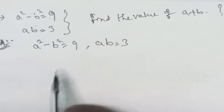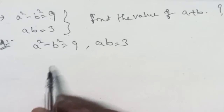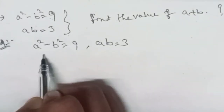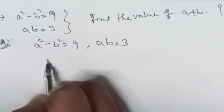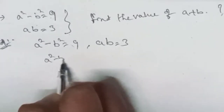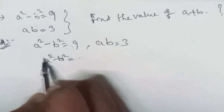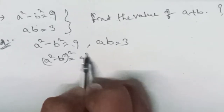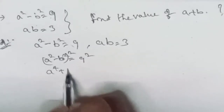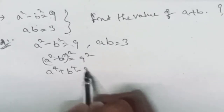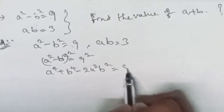What I am going to do is square this equation on both sides. So that will be: a squared minus b squared, whole square, is equal to 9 squared. Expanding, that gives a to the power of 4 plus b to the power of 4 minus 2a squared b squared is equal to 81.